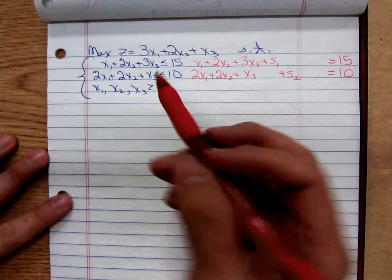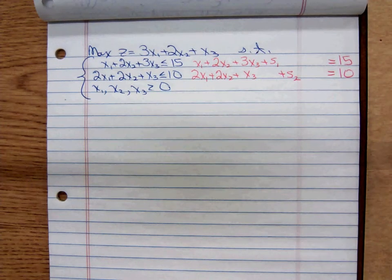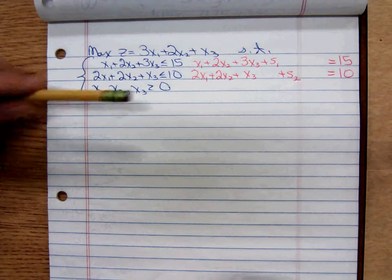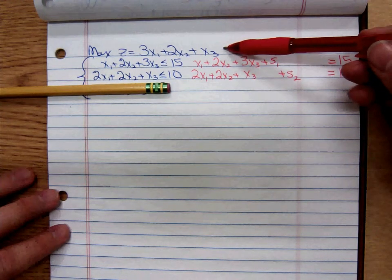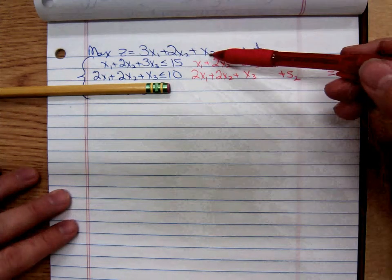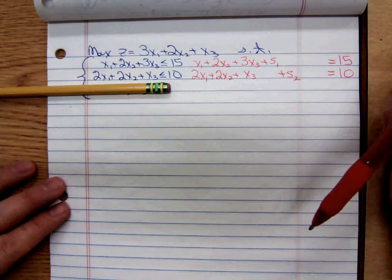The third, we don't have to worry about the non-negativity constraints. That's not going to be rewritten, but we're going to rewrite the objective function. We're going to pick the terms up on the right and move it over to the left.